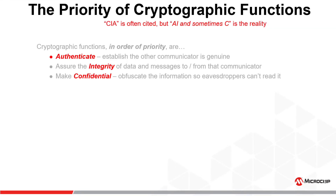The priority of cryptographic functions. CIA is often used as a mnemonic memory aid for the trilogy of security, which is confidentiality, integrity, and authentication. CIA makes us think of the Central Intelligence Agency, which makes us think of security. You may have heard CIA defined as confidentiality, integrity, and availability. Availability is used when speaking in terms of cybersecurity, whereas we use authentication when in the context of hardware enforced embedded security.